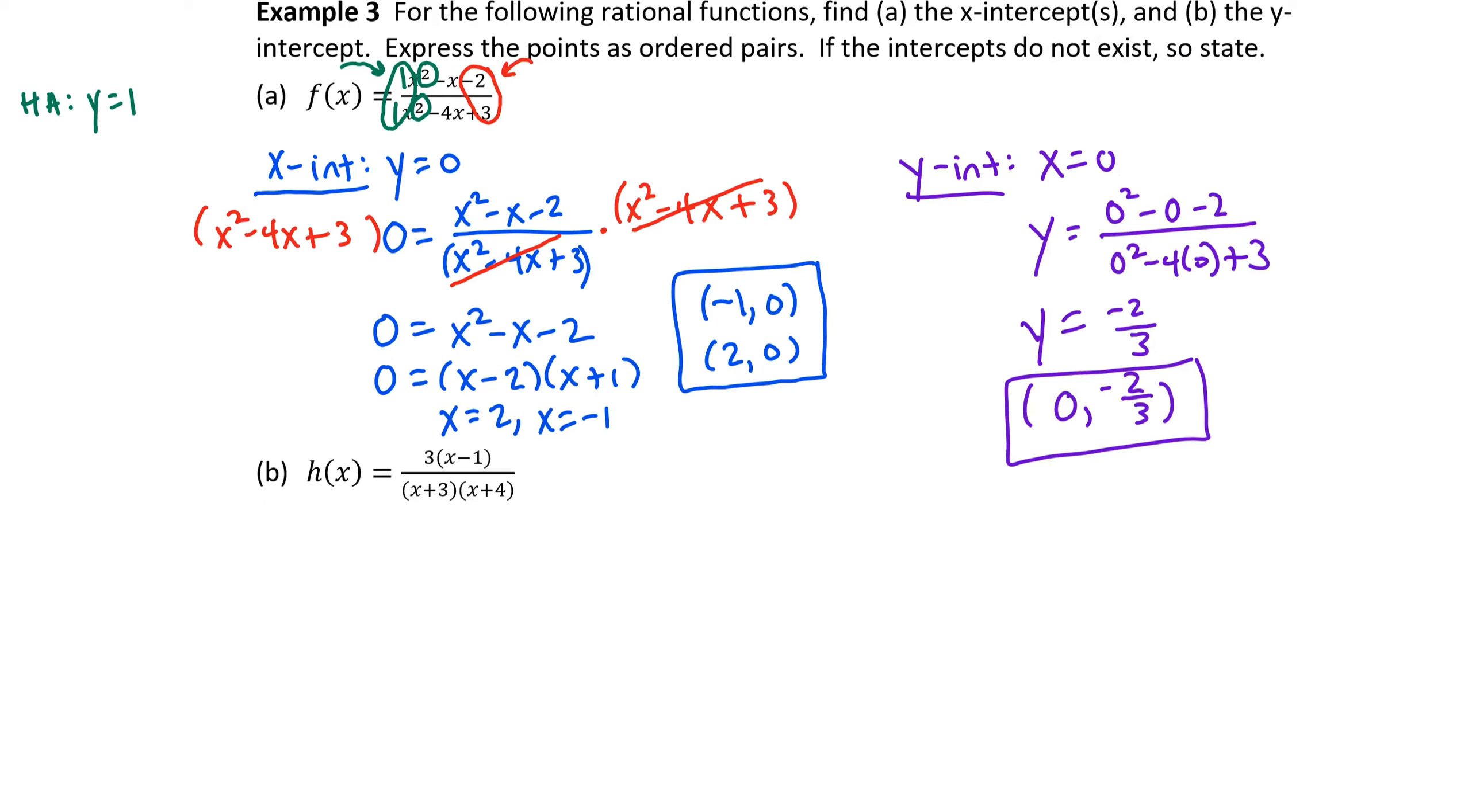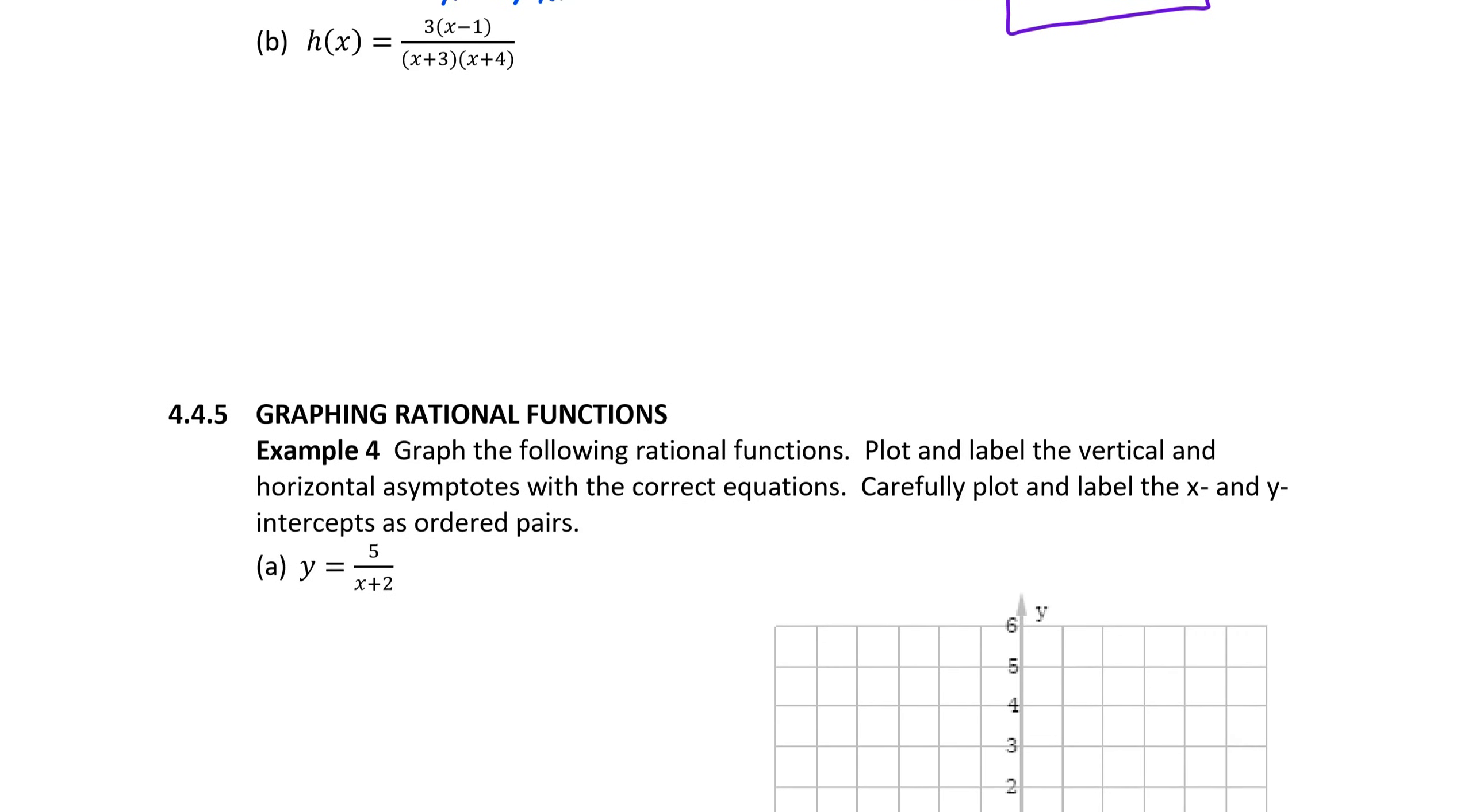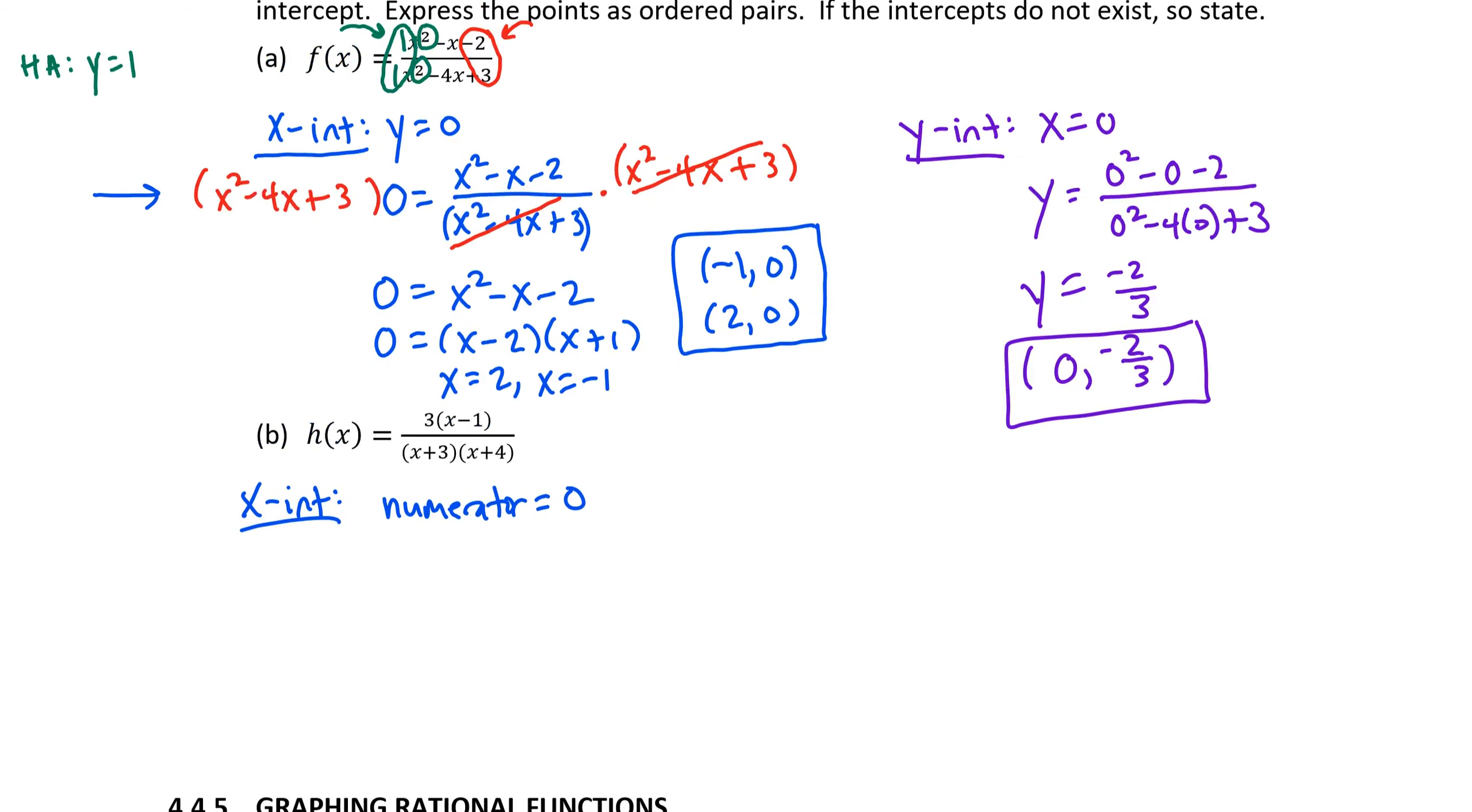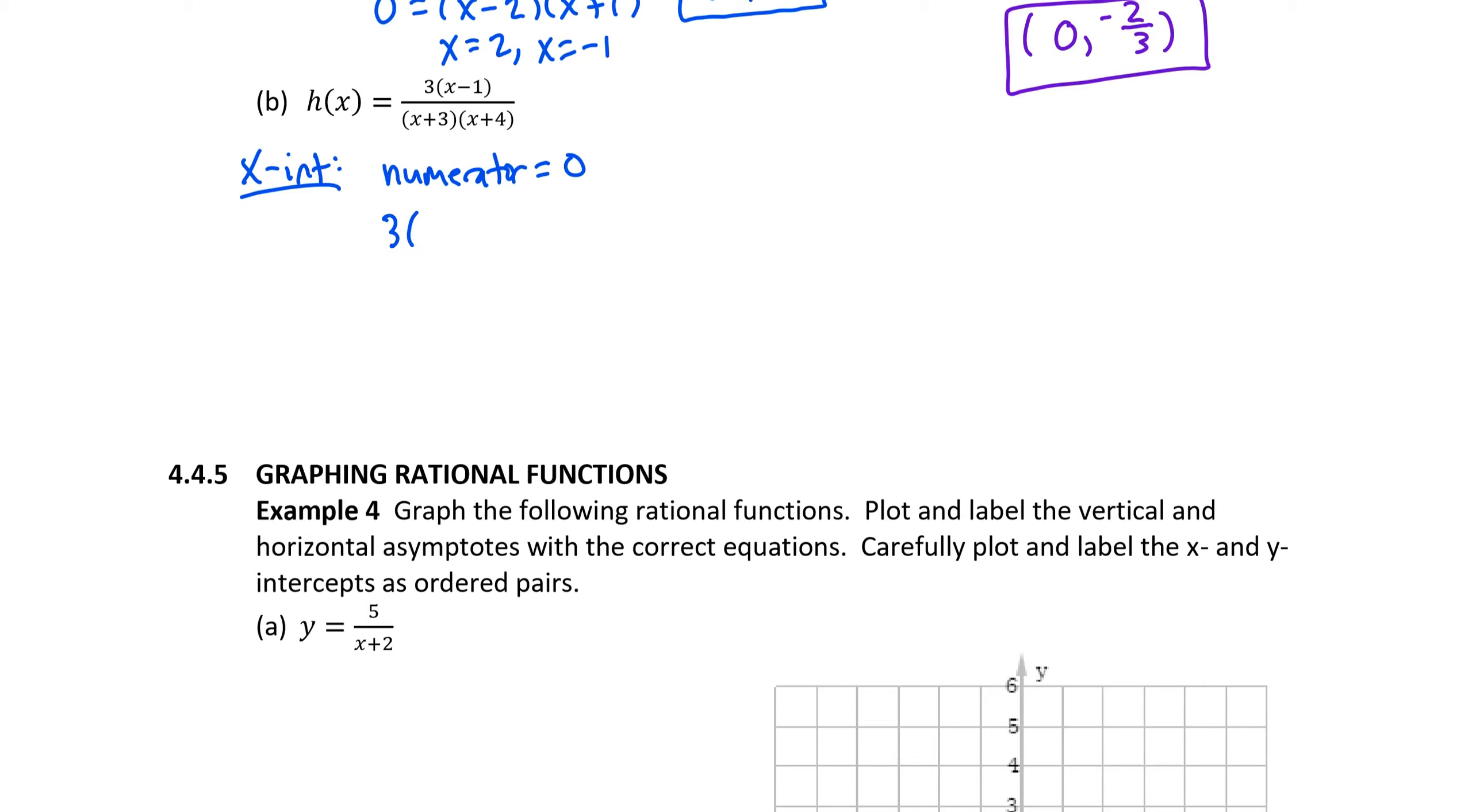Let's practice x and y-intercepts on the next example. And let's use our shortcuts. To find an x-intercept, our shortcut is we're going to set the numerator equal to 0. So essentially, we are skipping the part where we multiply both sides by the common denominator. So setting our numerator equal to 0, we have a constant factor 3 and then a variable factor x minus 1.